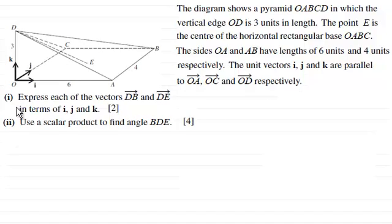We've got a couple of questions here. In the first question we've got to express each of the vectors DB and DE in terms of I, J and K for two marks. And then the second part use a scalar product to find the angle BDE for four marks. So if you'd like to have a go at this, just give you a moment to pause the video. When you come back I'll give you the numerical solutions and if you're still stuck you can go through the work solution with me.